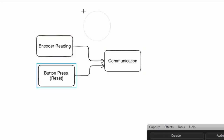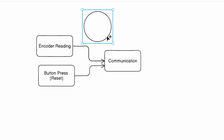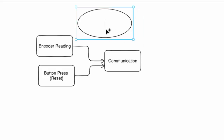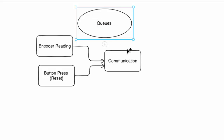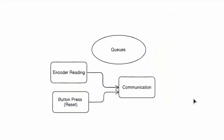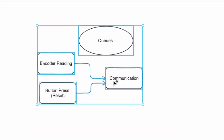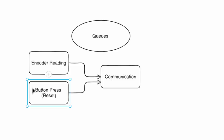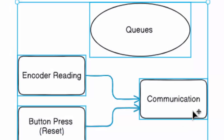So we have an encoder reading task, a button press task, and a communication task. To share information between them, we will use a queue for inter-task communication. This is a perfect example connecting to our previous tutorials where we already covered how to create tasks in an ESP32 FreeRTOS system and how to pass data through queues for inter-task communication.